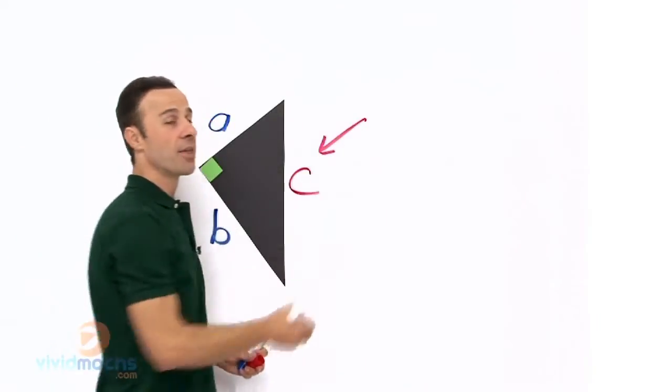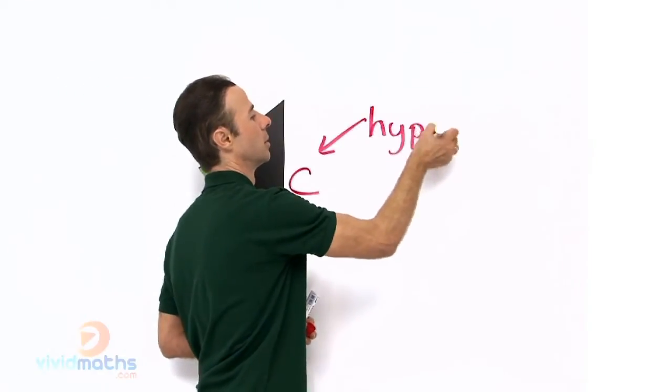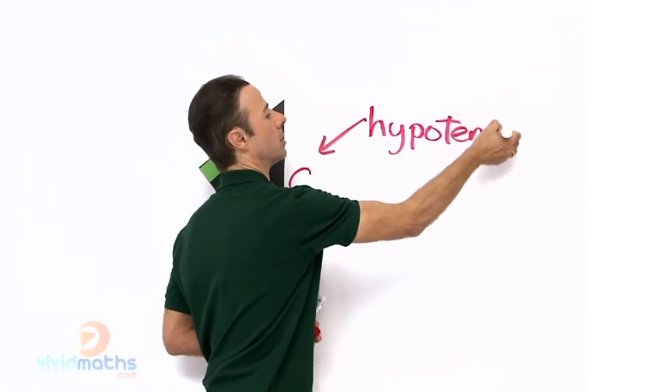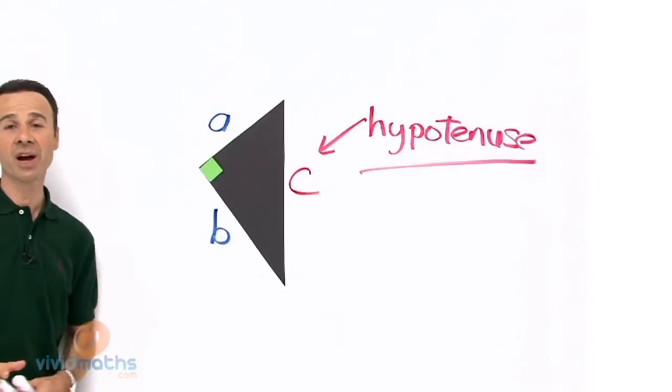Now that C, that longer side is referred to as the hypotenuse. It is a long word for a long side.